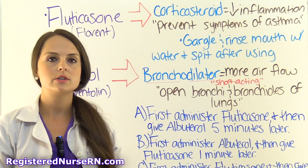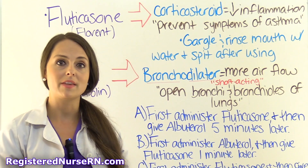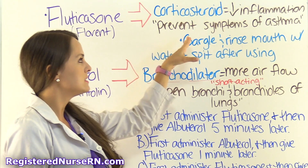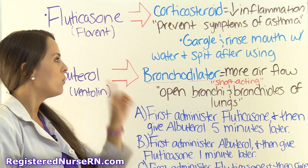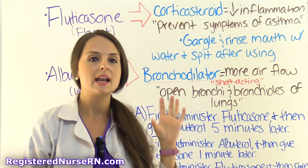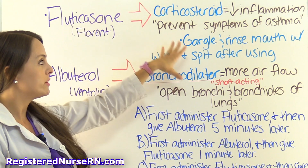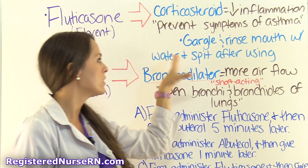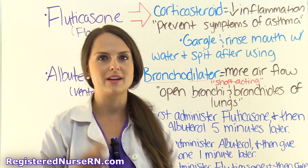What this corticosteroid is going to do is decrease inflammation, because it suppresses our immune system, which takes away that inflammation. It's great at preventing symptoms in a person with asthma. One important nursing note: whenever you give these corticosteroid inhalers, you want to make sure patients gargle and rinse their mouth with water and spit it out after using, because these medications can cause thrush and irritate those mucous membranes.